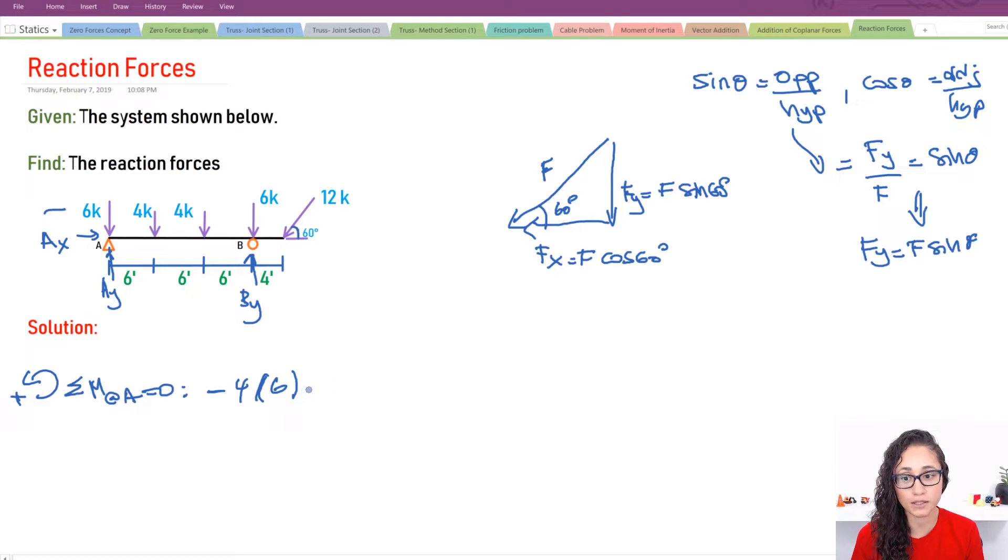Now, the next one is minus another four. But this time my moment arm is 12 because I have six plus six, which is 12. Then I have minus six kips. It's still negative guys, because my moment is still going this way. And all these forces are going the opposite, going down. So I have minus six. And this time I have six plus six plus six, which is 18 feet. And this is kips. And then I have plus By also times 18 because it's the same moment arm. It's acting the same as six. We said that By is going to be going up. And so it's going the same direction as where I took my moment. And that's why it's going to be positive By.